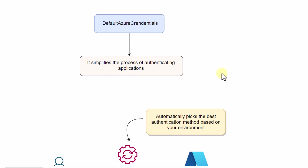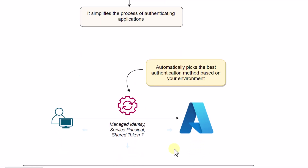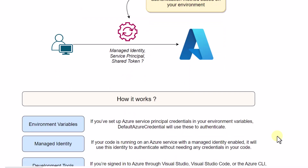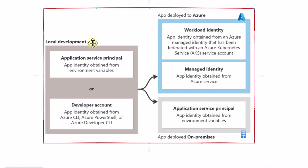How does it do that? As we know, there are a lot of authentication mechanisms when we work on Azure — like managed identity, service principal, shared token — and we can use any one of them. But the problem is all these authentication mechanisms are not generic, and we have to pick and choose based on the platform we are working on. Let me give you an example as shown in this diagram.